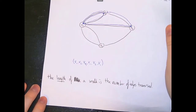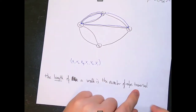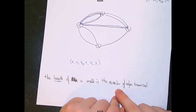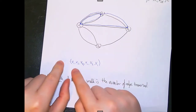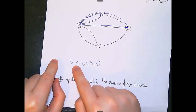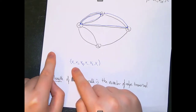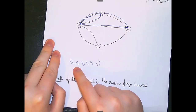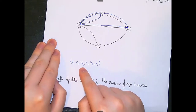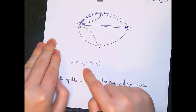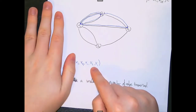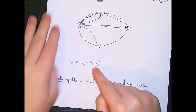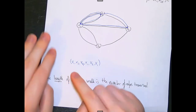The length of a walk is the number of edges traversed in that specific walk. Note that this isn't the number of unique edges — it's just the total number of edges traversed. In this walk, we traverse: the edge from V₁ to V₂, from V₂ to V₄, from V₄ to V₁, from V₁ to V₂ again, and from V₂ to V₁. So the length of this whole thing is five.